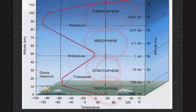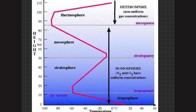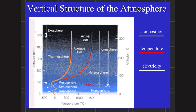In the mesosphere, stratosphere, and troposphere, major constituents of air — such as nitrogen and oxygen — have uniform concentrations due to continuous circulation of air, movement, and winds. In the thermosphere and exosphere, however, there is non-uniform concentration of these gases, which is why those layers are called the heterosphere. This homogeneity and heterogeneity of the atmosphere is summarized in the diagram.